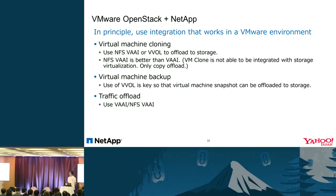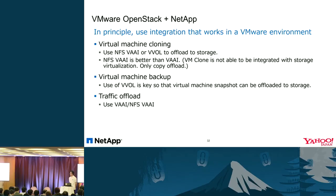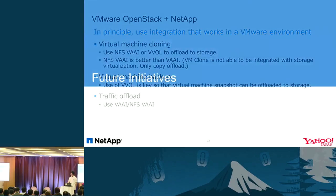By using VVOL, VM snapshots can be linked to storage-level snapshots and VM clones. For data creation offload, VAAI or NFC VAAI can be leveraged. In summary, KVM and vSphere environments have been explained. Depending on which hypervisor you use, the storage functionality you need will differ. You must choose storage that has linkage capability with your hypervisor, and you must clarify the requirements for your self-service environment.